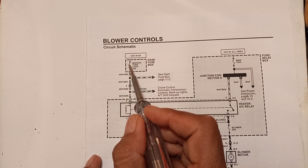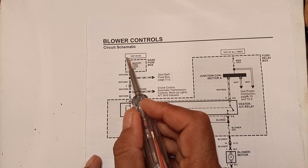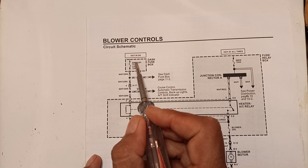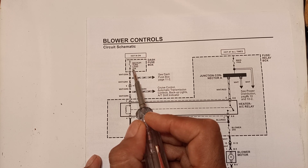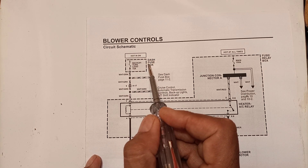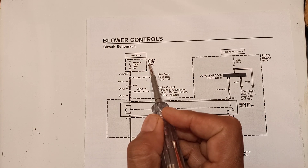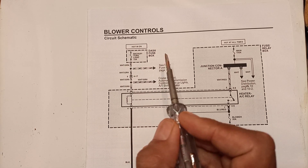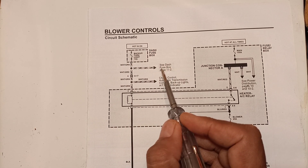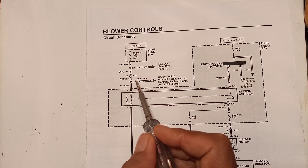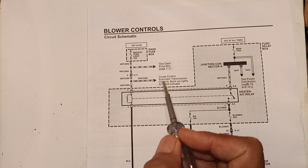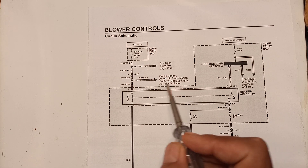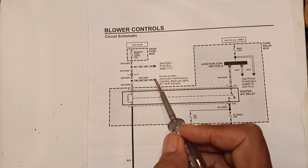This circuit schematic starts from here — 'hot in on.' This power is applied from the key or from the relay. Keyed power is applied to this fuse — a 15 ampere backup turn light fuse located in the dash fuse box inside the vehicle. From here, power comes to this splice and is distributed to cruise control, automatic transmission controls, backup lights, and the 4WD shift indicator.